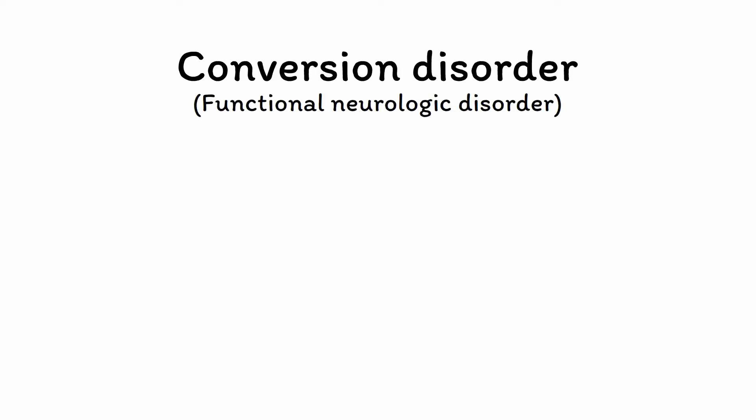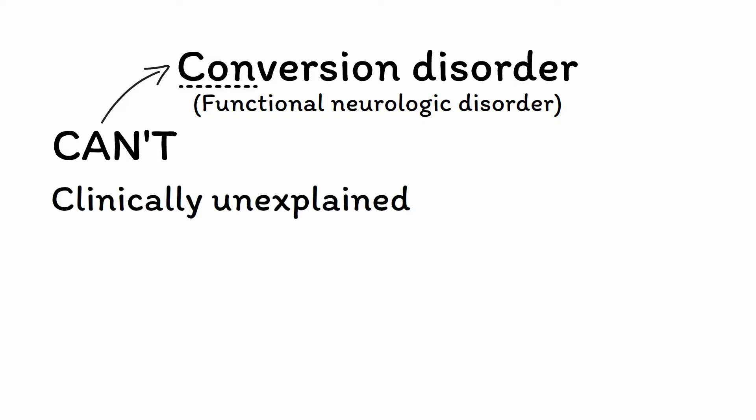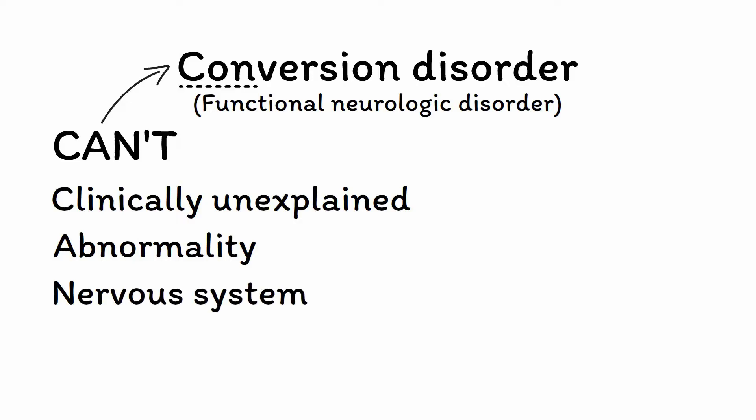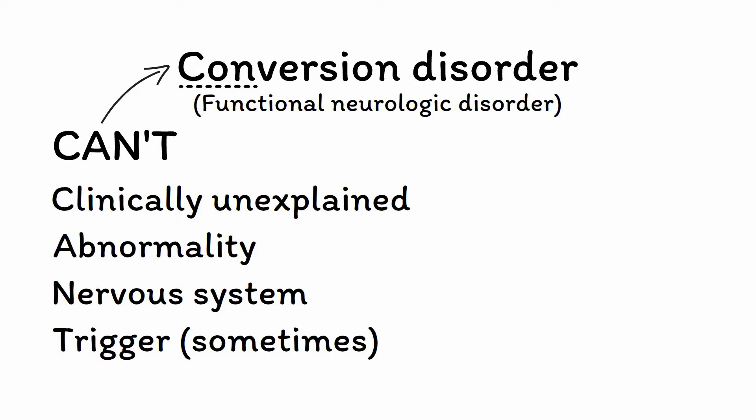The next stop on our tour of somatoform disorders is conversion disorder, which also increasingly goes by the name functional neurologic disorder. You can remember the core features of this diagnosis by thinking of it as 'cantversion disorder,' which should help you remember that it involves a clinically unexplained medical abnormality specifically involving the nervous system that is sometimes, but not always, brought on by a stressful trigger. The word 'can't' will also help you remember that these patients aren't faking it — they genuinely can't do the things they say they can't, even in the absence of objective pathology.